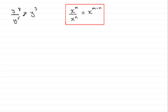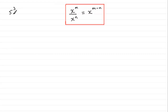What I want to look at in this video is to extend this idea to negative powers. To demonstrate this, suppose we've got 5 cubed divided by 5 to the power 4. Then according to the division rule, because they're to the same base, we just subtract the powers: 5 to the power 3 take away 4 gives 5 to the power minus 1. But how do we interpret 5 to the power minus 1?